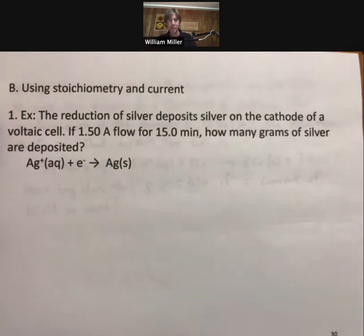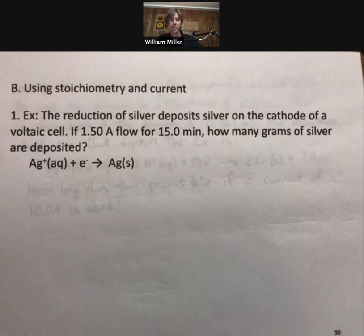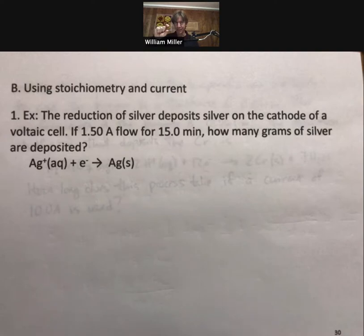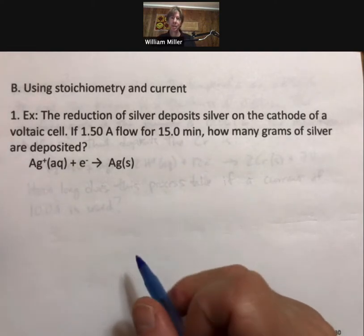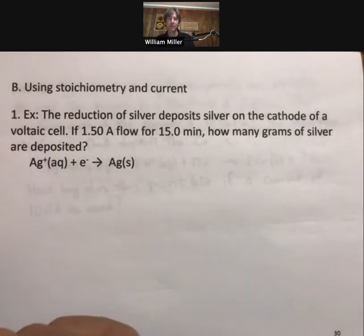In this example, the reduction of silver deposits silver on the cathode of a voltaic cell. The reduction of silver was one of the first ways they used to measure current and actual electricity way back in the day when they first started having electricity in houses. You would have a box of silver, and as the silver became either oxidized or reduced, you could figure out how much current and how much electricity had flowed. If 1.50 amps flow for 15 minutes, how many grams of silver are deposited?